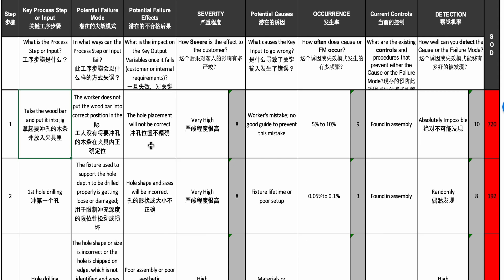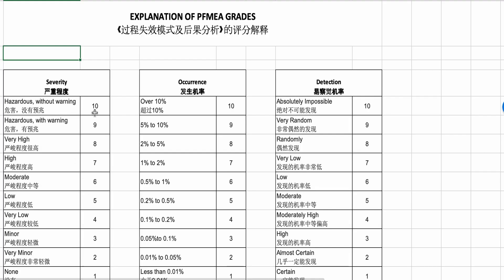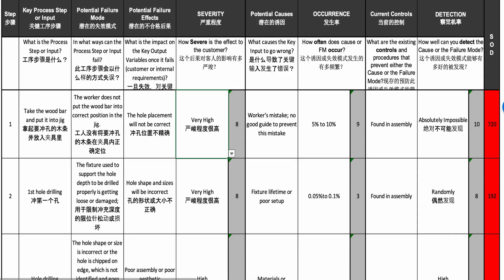The impact is that the hole is not placed correctly, and just like with furniture that needs to be assembled, the whole product ends up bad — you cannot even assemble it. So severity is very high. It's important to have an illustration for what scores mean, otherwise numbers become too subjective. This is an 8 out of 10 — very high severity.